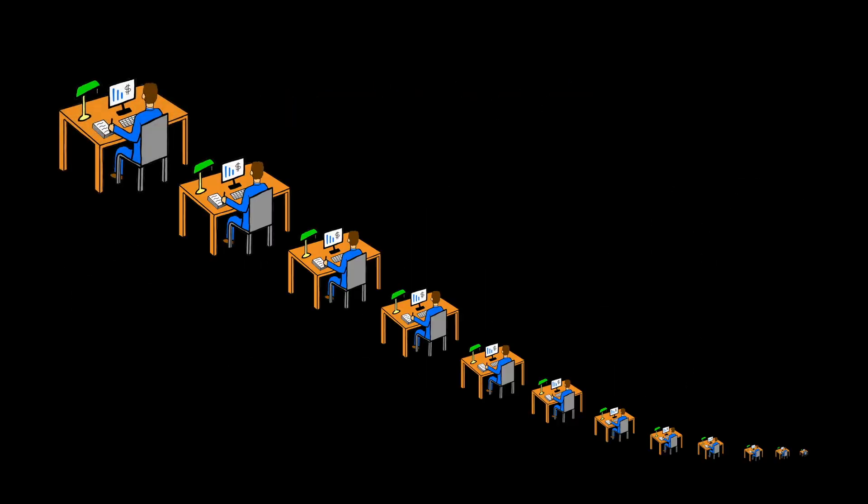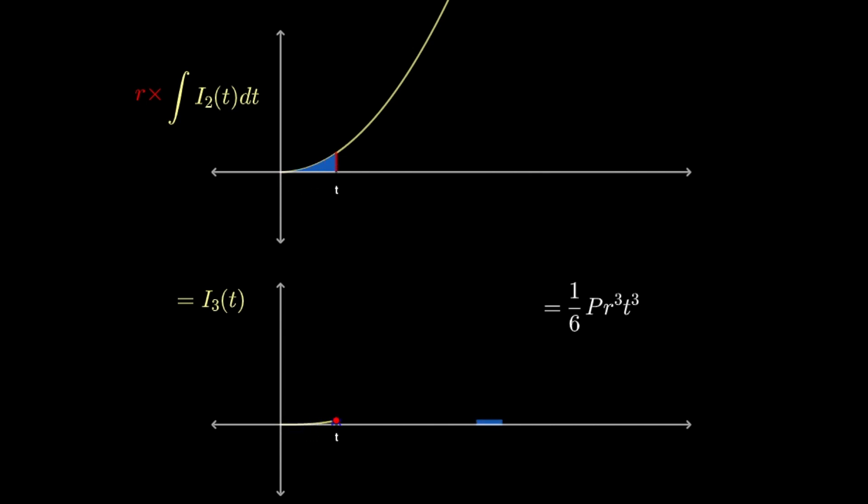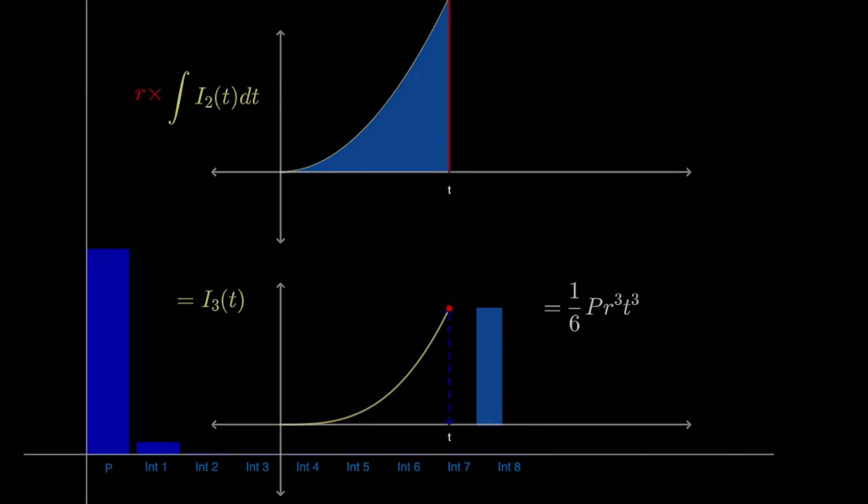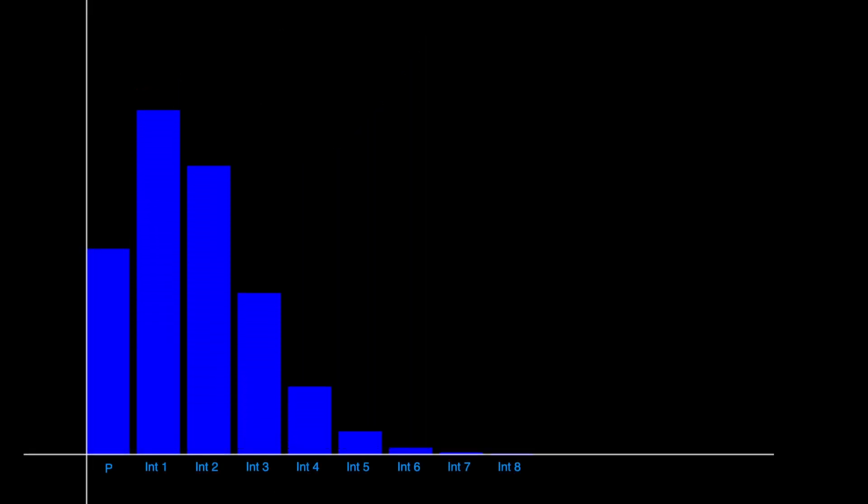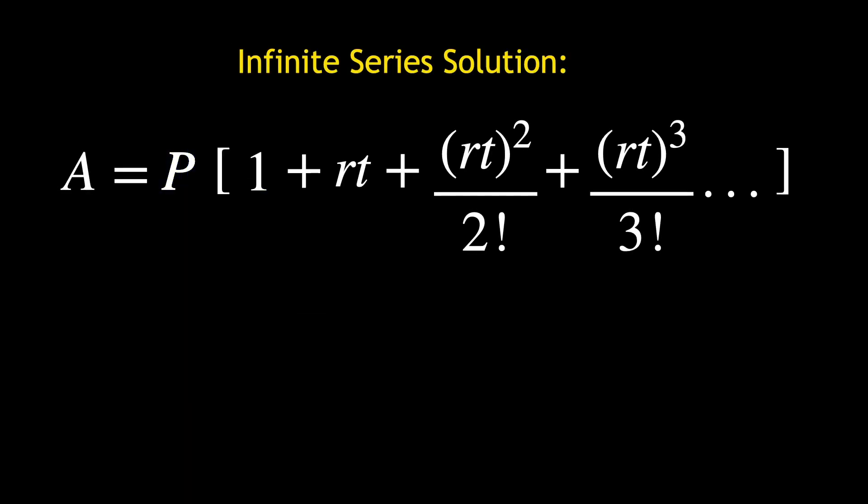But keeping track of the degrees of interest and letting the account grow continuously, with some help from calculus, gives the Taylor series definition of E to the X.